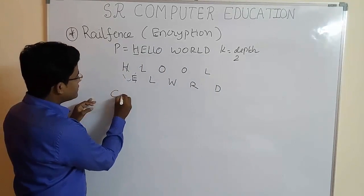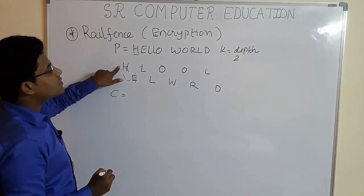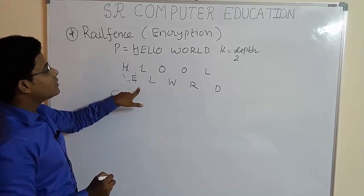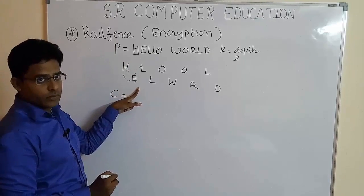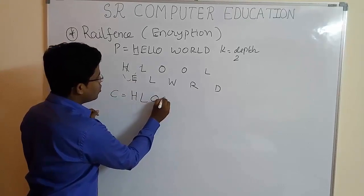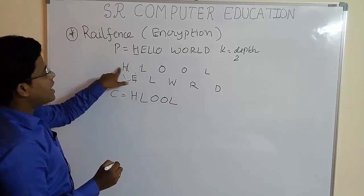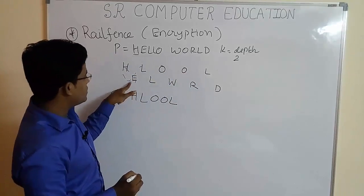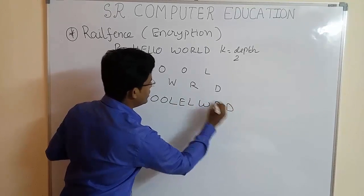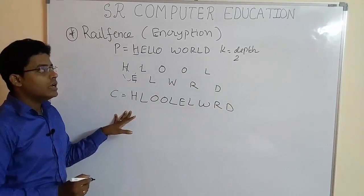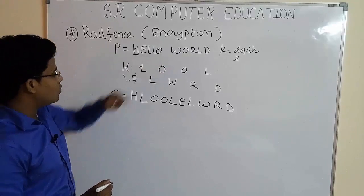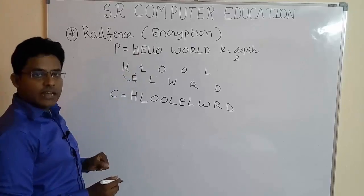The ciphertext is H L O O L. Now the remaining is E L W R D. So this is the encryption of the plaintext hello world using railfence technique.